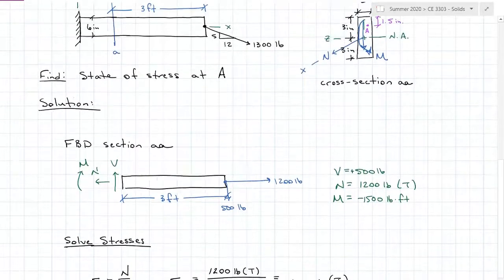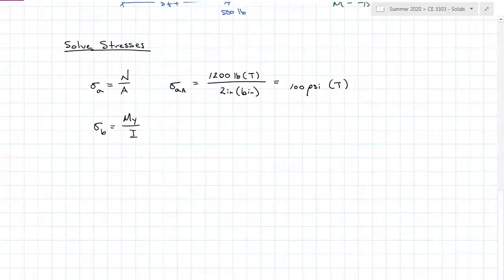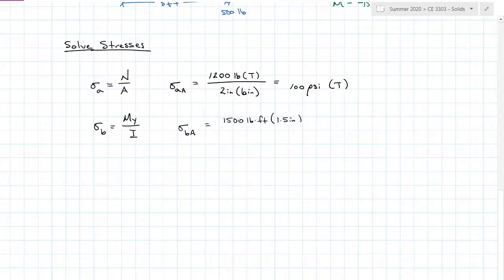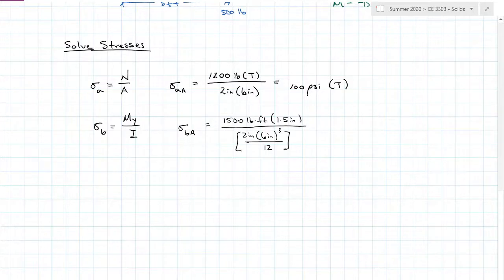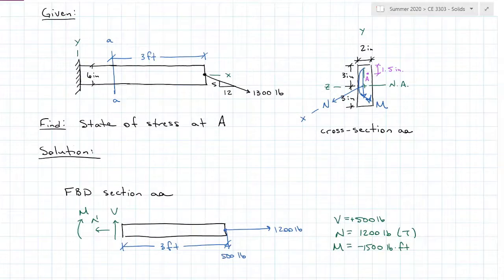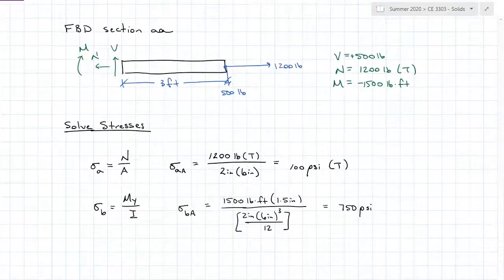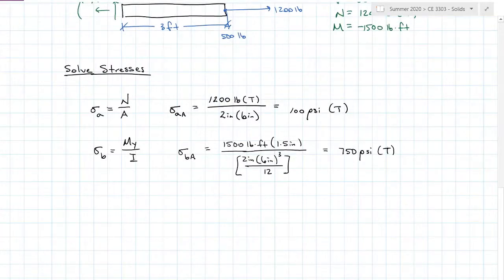I also have a bending stress due to the moment. My bending stress at A equals the internal moment at A, 1,500 pound-feet, times the distance of A from the neutral axis, which is 1½ inches, all over the centroidal moment of inertia about the neutral axis — 2 inches by 6 inches cubed divided by 12 — making sure to convert the moment to pound-inches. That gives a bending stress at A of 750 psi. Looking at the picture, A is on the tension side of that negative moment, so we are in tension at A.